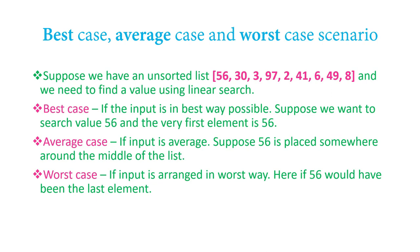The average case is when the input is of average type — in this example, 56 is placed somewhere in the middle of the list. The worst case is when the input is arranged in the worst possible way — if 56 is at the very last position, you have to scan all elements. So the worst case time complexity is Big O of N. In the next tutorial, we are going to start with data structures, as your prerequisites are now done.